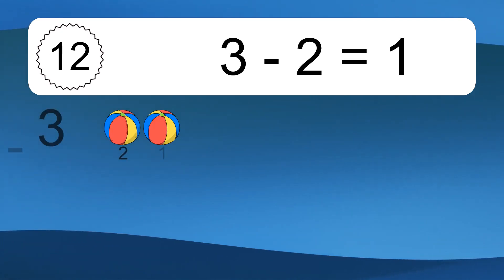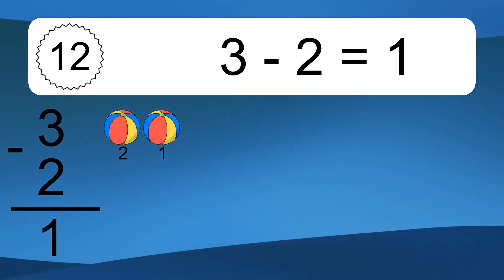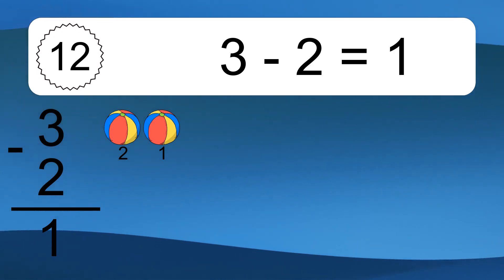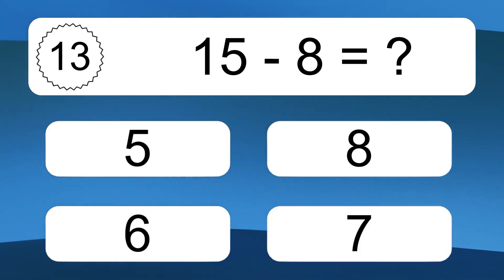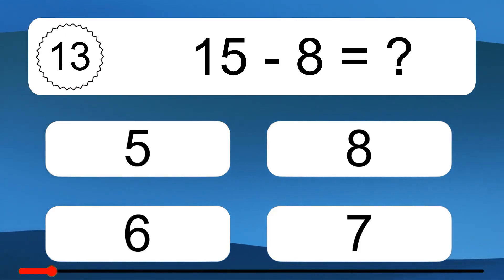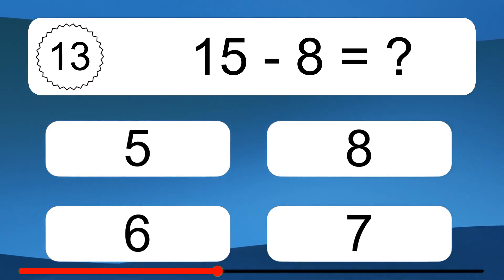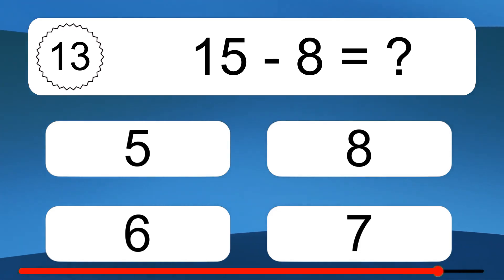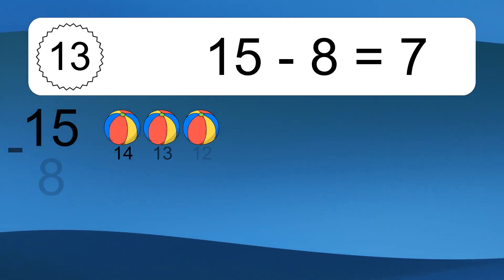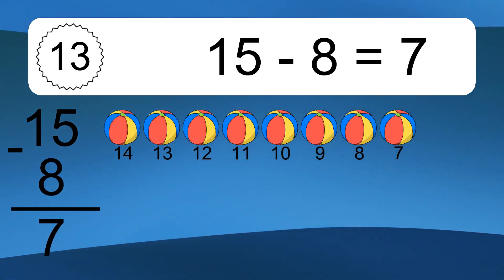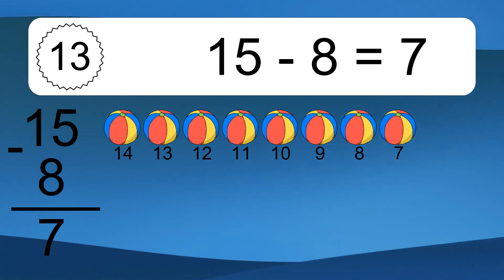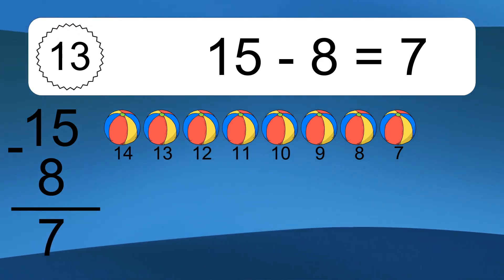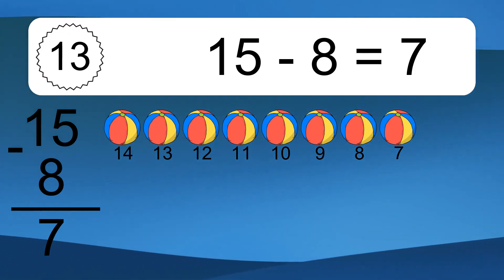3 minus 2 equals what? 3 minus 2 equals 1. Let's count it: 2, 1. 15 minus 8 equals what? 15 minus 8 equals 7. Let's count it: 14, 13, 12, 11, 10, 9, 8, 7.